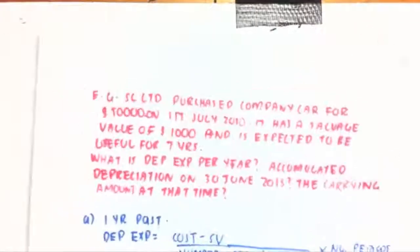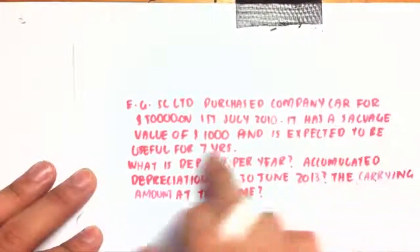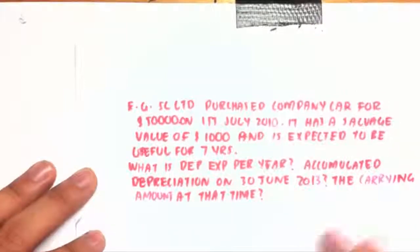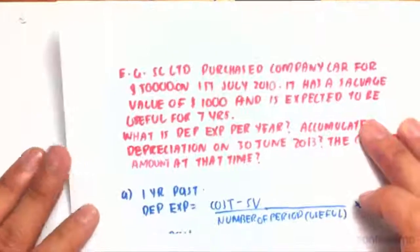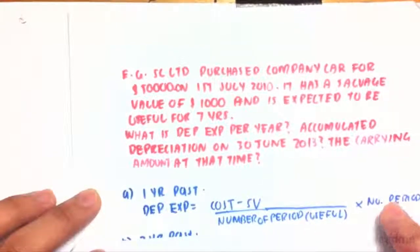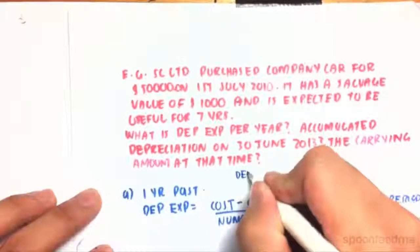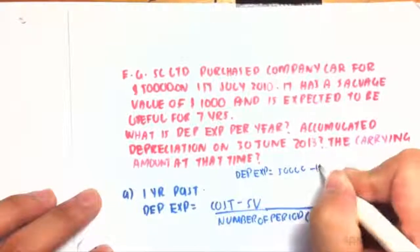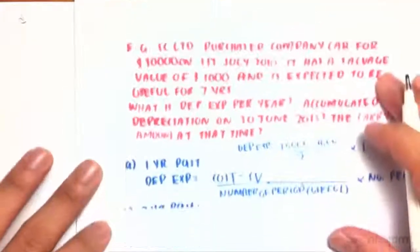SCL Ltd purchased a company car for $50,000 on the 1st of July 2010. It has a salvage value of $1,000 and an expected useful life of seven years. The depreciation expense per year equals ($50,000 minus $1,000) divided by seven years, times one year, which equals $7,000 depreciation expense.